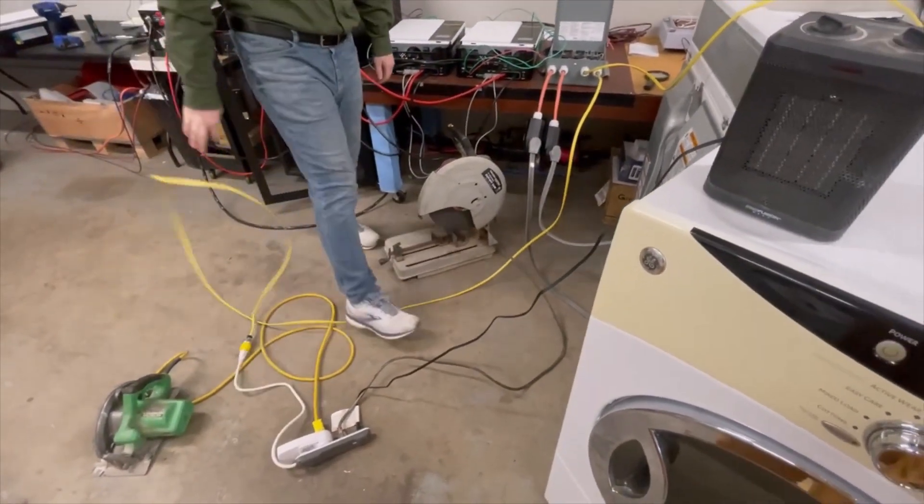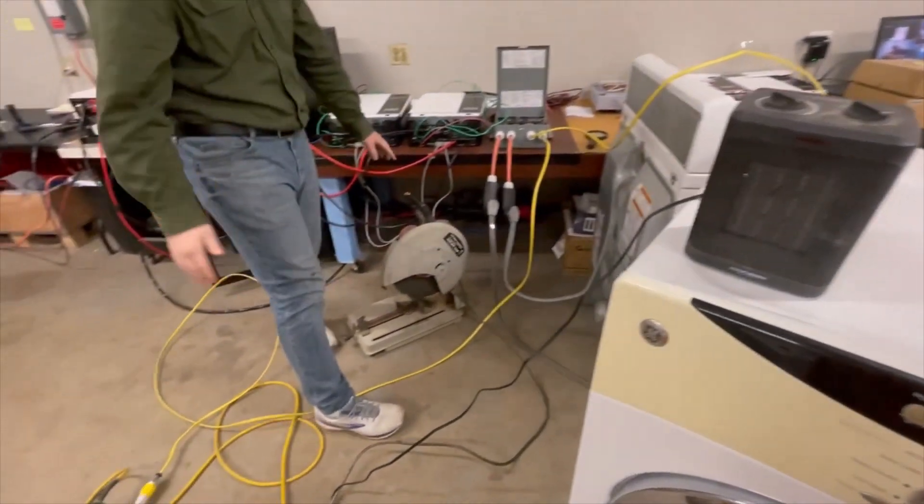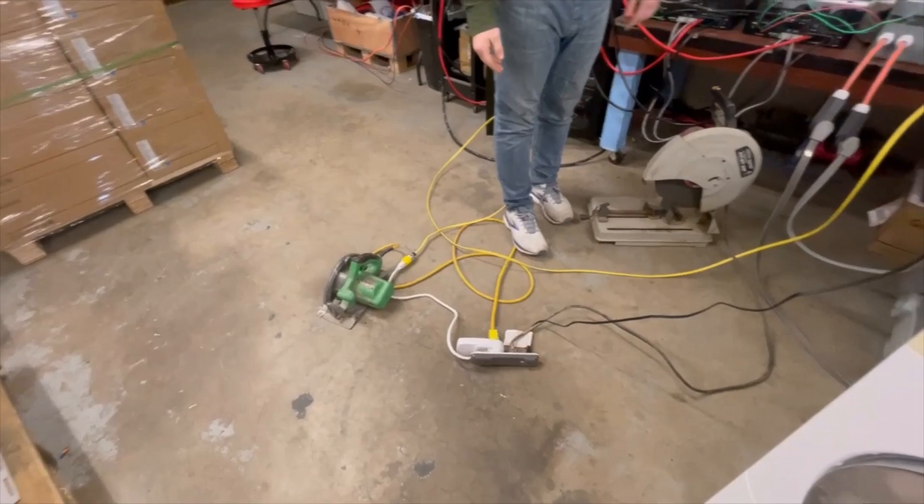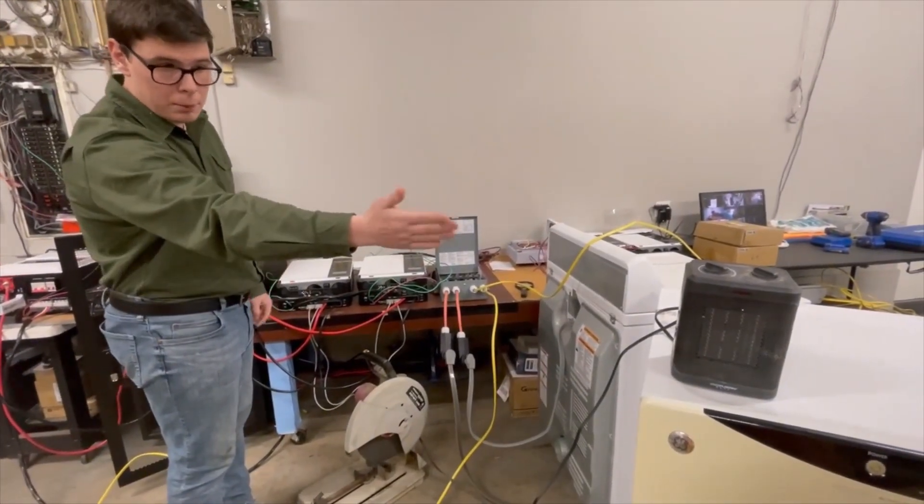What we have plugged in is a 1500-watt ceramic heater. We have a 15-amp chop saw, and we have a 15-amp circular saw. And we're going to try to turn on the base load, which should cut half the inverter's capacity right there.